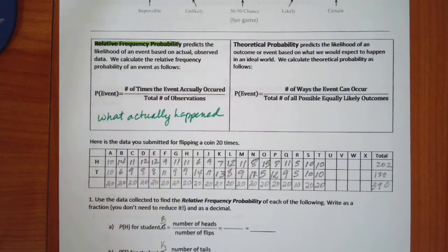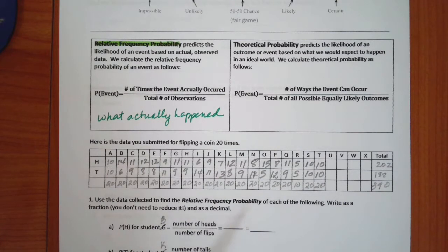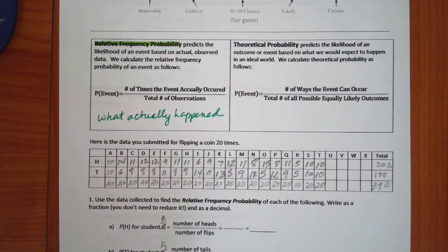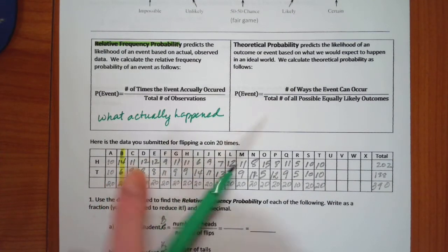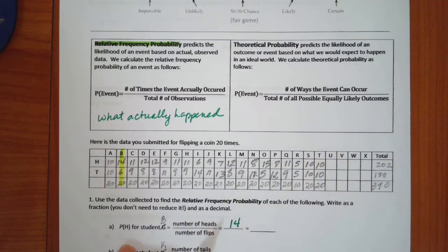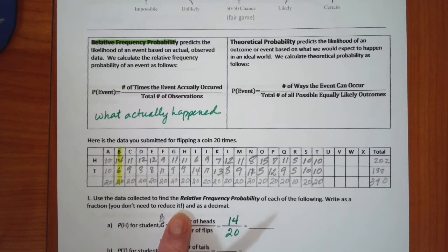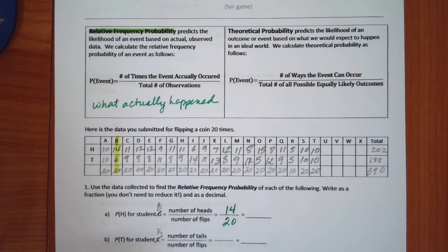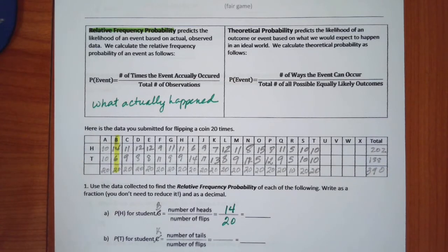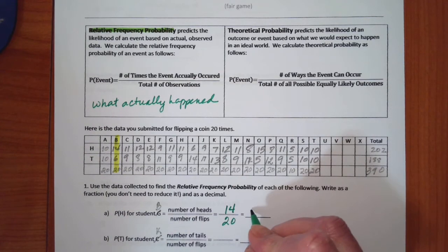One of the questions we asked was how many heads do you think you will get? Let's look at what happened for particular students. P(H) means the probability of heads for a given student. For Student B, there were 14 heads out of 20 flips. As a fraction that's 14/20, and as a decimal — 14 divided by 20 — we get 0.7.